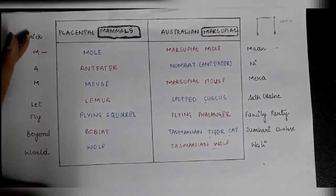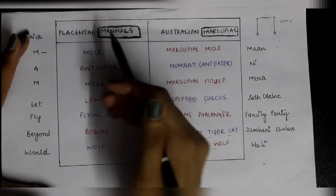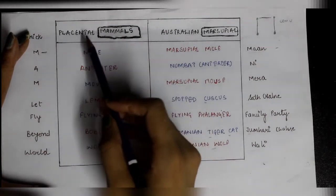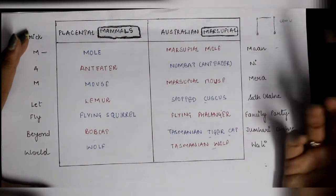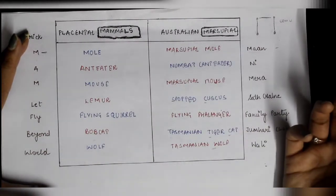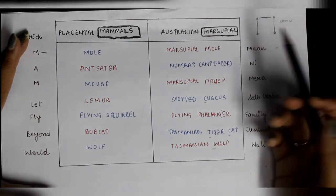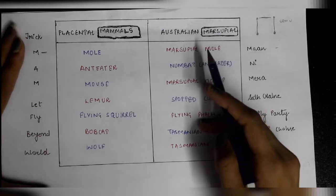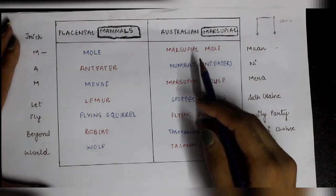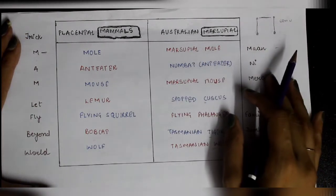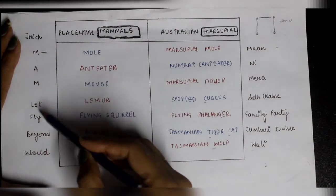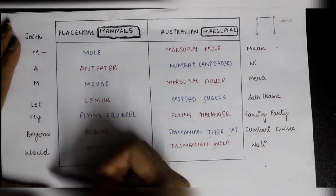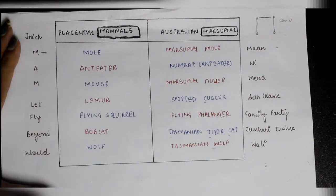You will only be able to give the answer if you know what are placental mammals and what are Australian marsupials. For this there is a very easy trick to remember. The first trick is 'ma'am let fly beyond world' — this trick is for placental mammals.